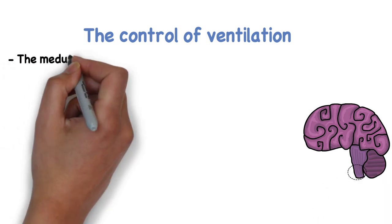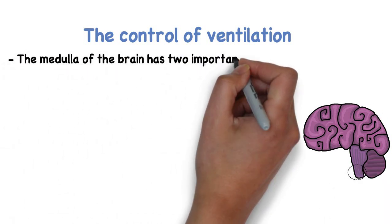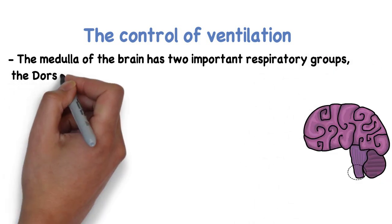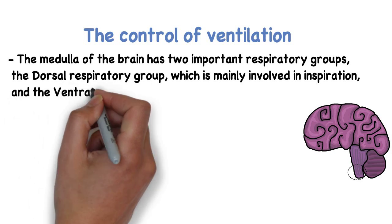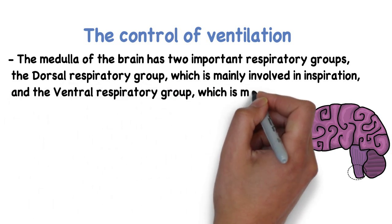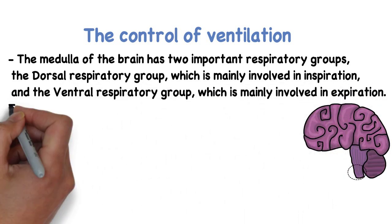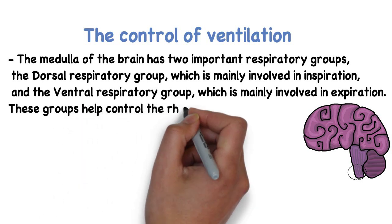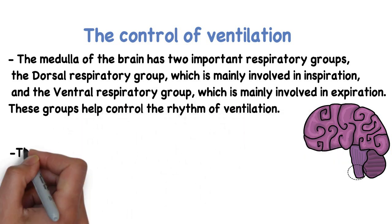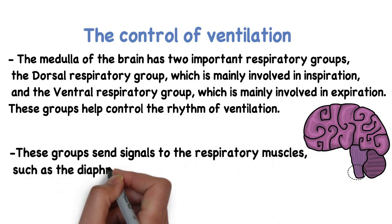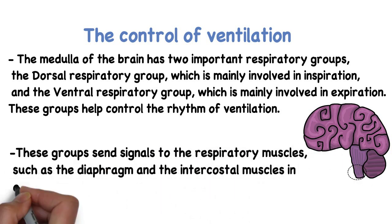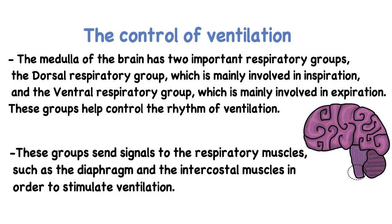The medulla of the brain plays an important role in ventilation, as it has two important respiratory groups: the dorsal respiratory group, which is mainly involved in inspiration, and the ventral respiratory group, which is mainly involved in expiration. These groups help control the rhythm of ventilation and send signals to the respiratory muscles, such as the diaphragm and the intercostal muscles, in order to stimulate ventilation.